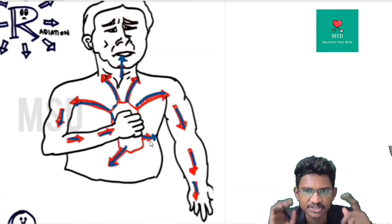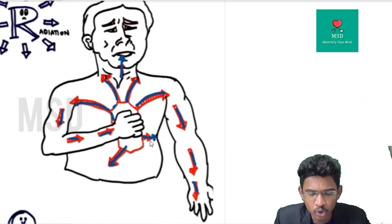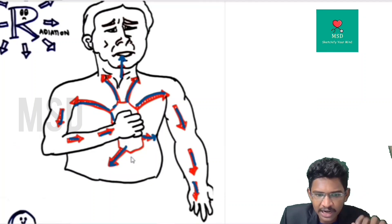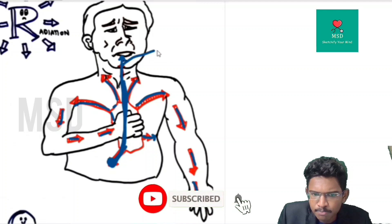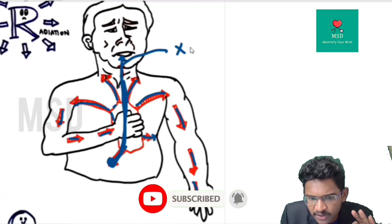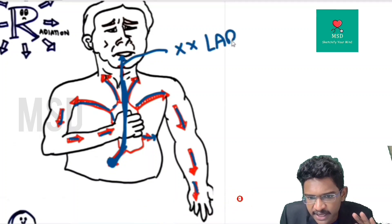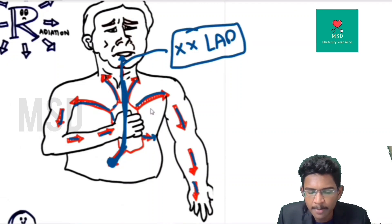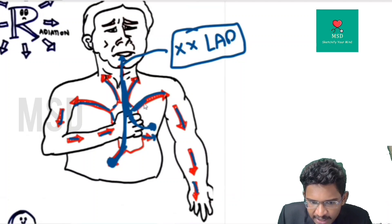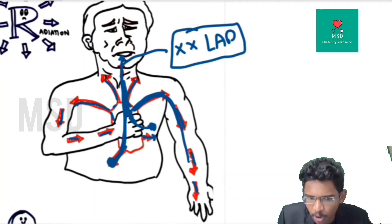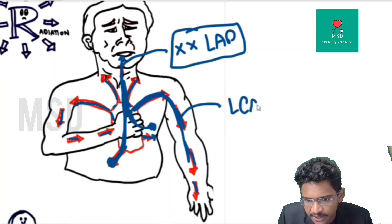Pain originating from the epigastrium and radiating to the jaw and neck mostly does not involve the left anterior descending artery. Pain originating from the retrosternal region and radiating towards the left part of the chest, left hand, left arm, and left shoulder — ulnar border — mostly involves the left coronary artery. This is the clinical finding that has been observed.